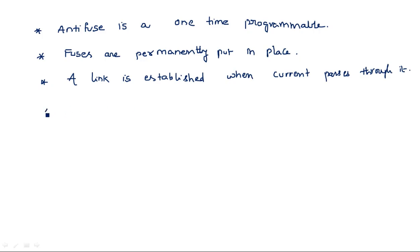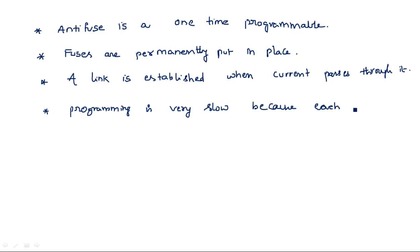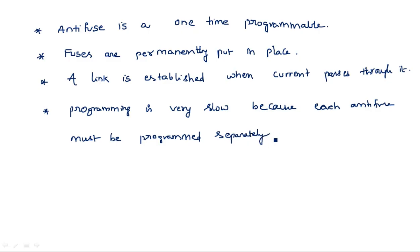Another drawback is that programming is very slow, because each anti-fuse must be programmed separately. However many anti-fuses there are, that many separate programs need to be given. In SRAM, all cells can be programmed at once without confusion, but with anti-fuse, every one of the N anti-fuses must be programmed individually each time.